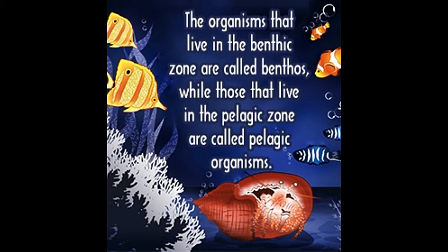Did you know? The terms benthic and pelagic are both derived from Greek words, which mean depth of the sea and open sea, respectively. More than two-thirds of the Earth's surface is made up of water. A myriad of life forms inhabit these vast regions, displaying an even greater diversity in terms of physical conditions and the aquatic plants and animals found there.